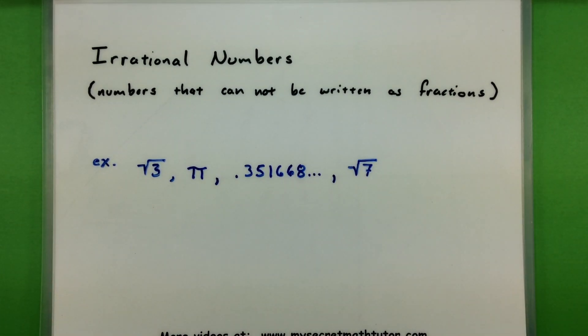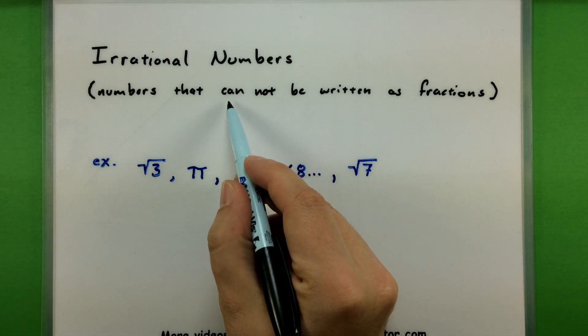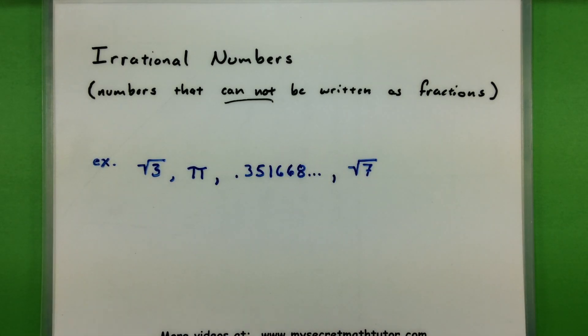Alright, the next major group, the irrational numbers. You almost want to consider these like the opposite of our rational numbers. These are numbers that cannot be written as a fraction. So as hard as we try, their decimal just keeps on going forever and ever and it doesn't repeat.